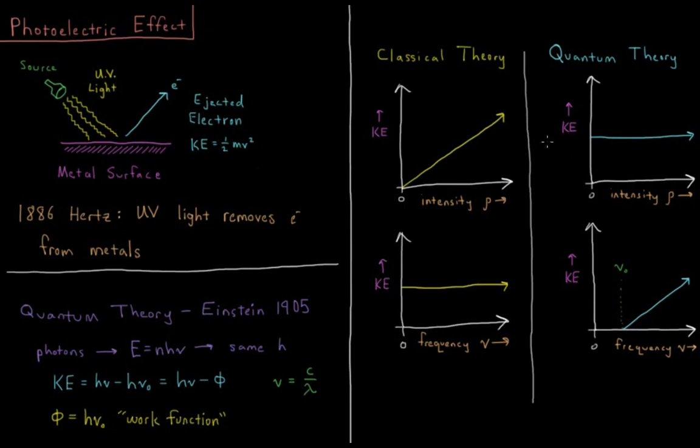What we instead saw in the experiment, which is what quantum theory predicts, is that the kinetic energy of the electron doesn't depend at all on the intensity. This is because the electron is getting kicked out when it absorbs the energy of a single photon. That electron gets that energy, then it takes however much energy it takes to dissociate from the metal surface, and the rest is all kinetic energy.